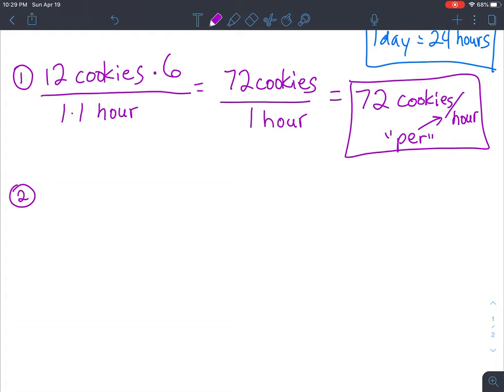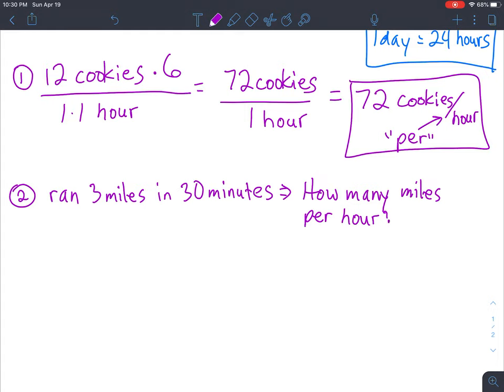let's say that you ran 3 miles. Okay, so you ran 3 miles in 30 minutes. And you're wondering how many miles per hour you ran. It doesn't necessarily mean that you ran that many miles. This is just kind of an estimate of how many miles you could run in an hour. So on number 2, let's start off with the first part of our fraction. Put that on top. So you've got 3 miles. And that compares to 30 minutes.